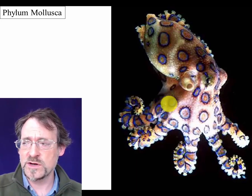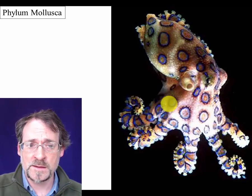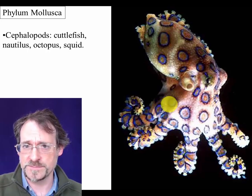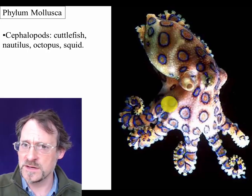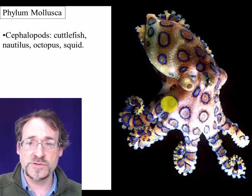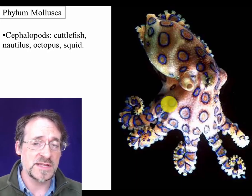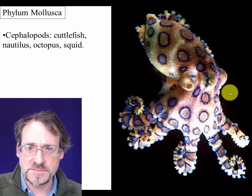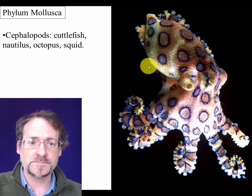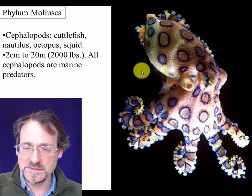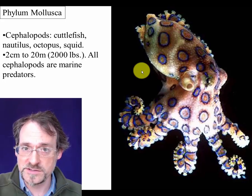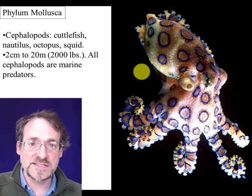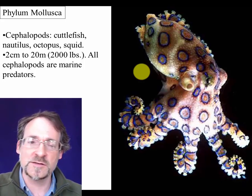My favorite group of mollusks — and one of my favorite groups of organisms overall — is the cephalopods. More than pretty much any other group of animals, the cephalopods are bringing the weird. They have a remarkable set of very strange adaptations, are extremely unusual organisms, and radically different in many ways from any other mollusks. In this group are basically all the animals with tentacles: octopuses, squid, nautilus, and cuttlefish. Some of them are the largest animals and largest predators among the invertebrates. All of them are predators, and they are very active with excellent sensory systems.